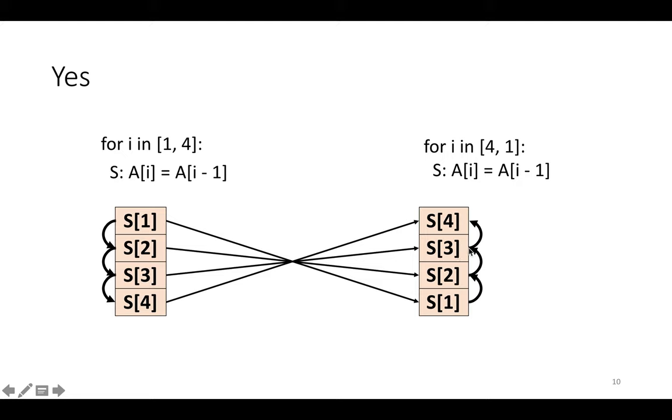And then when we do the reordering, let's look at how the edges change. So what we notice is that the edge, for example, going from s1 to s2, when we reverse the loop nest, originally it's pointing forward, representing that it's passing data forward in time in the program trace. And yet, when we reverse the program, it's going backward.